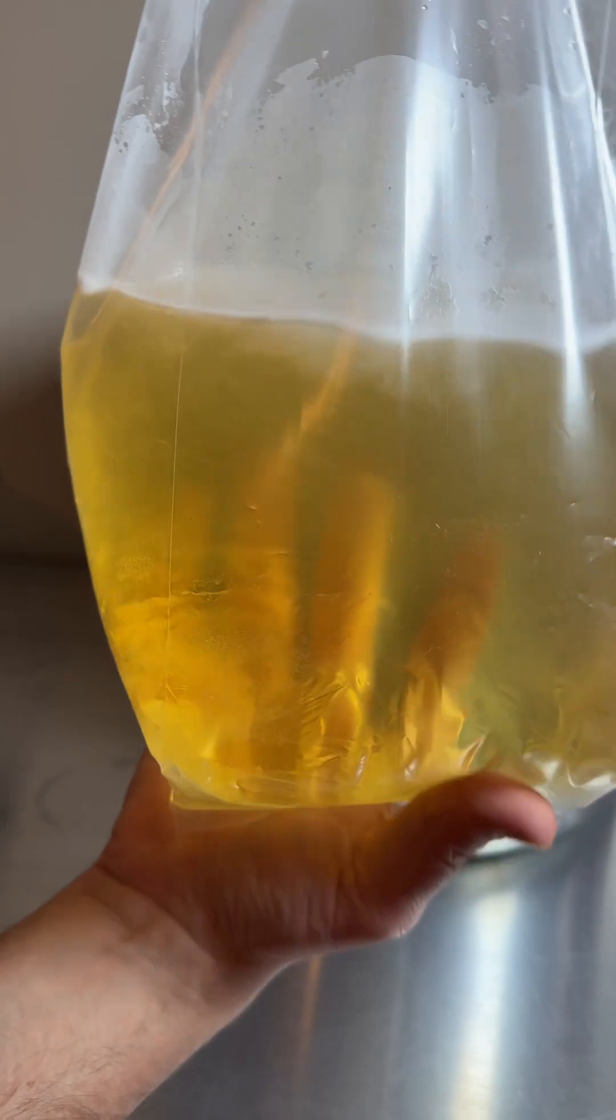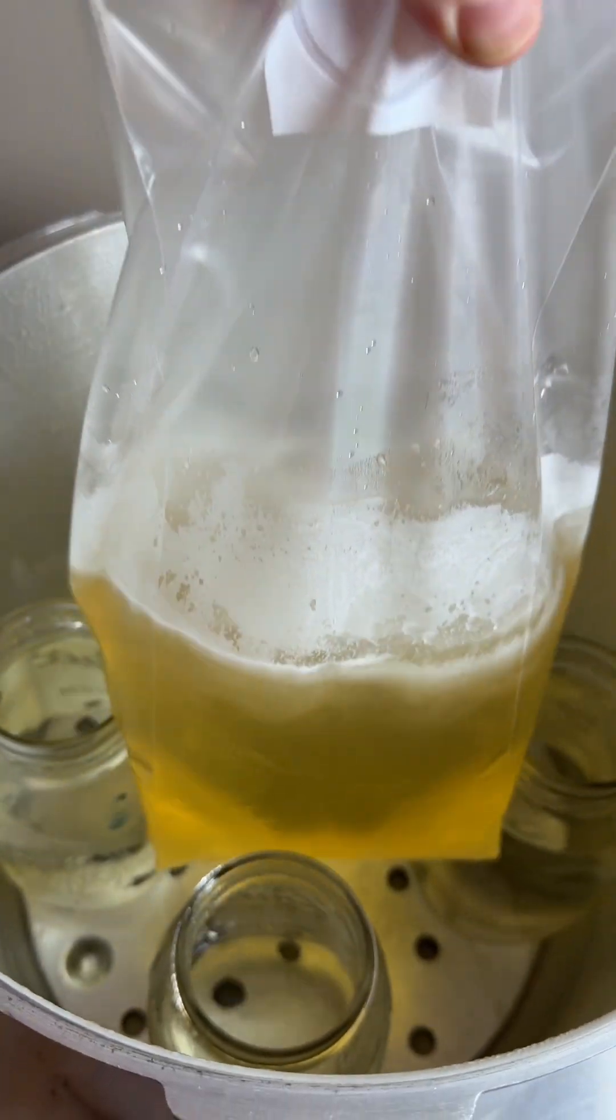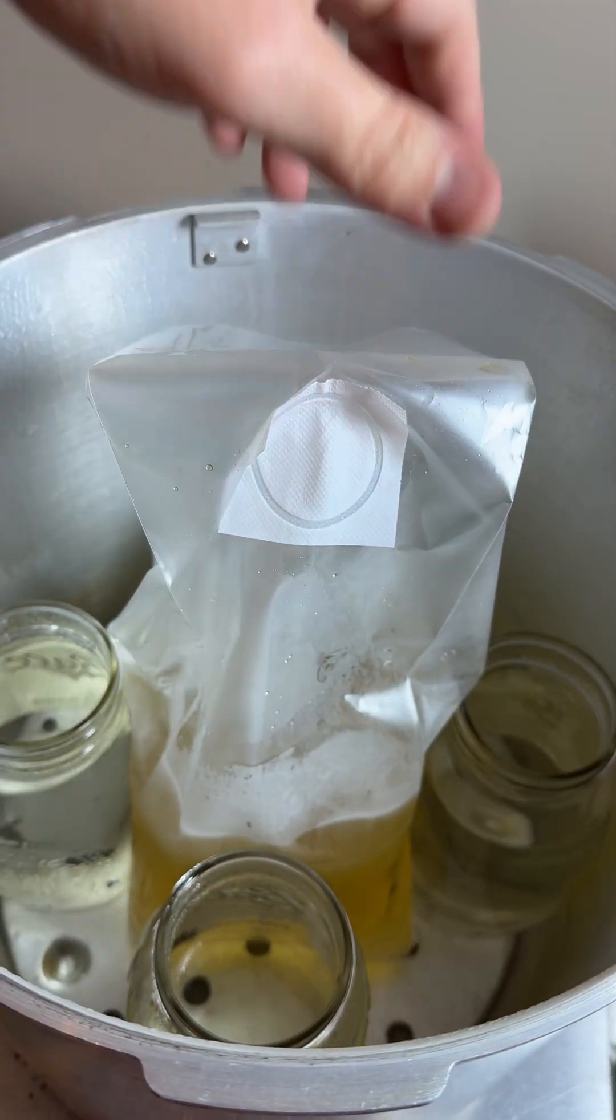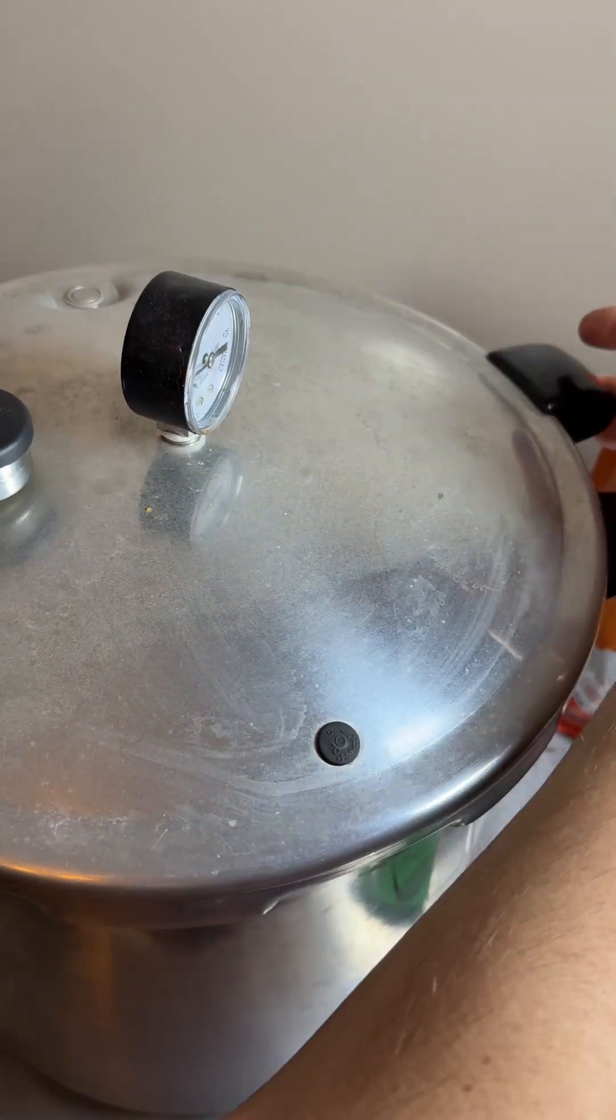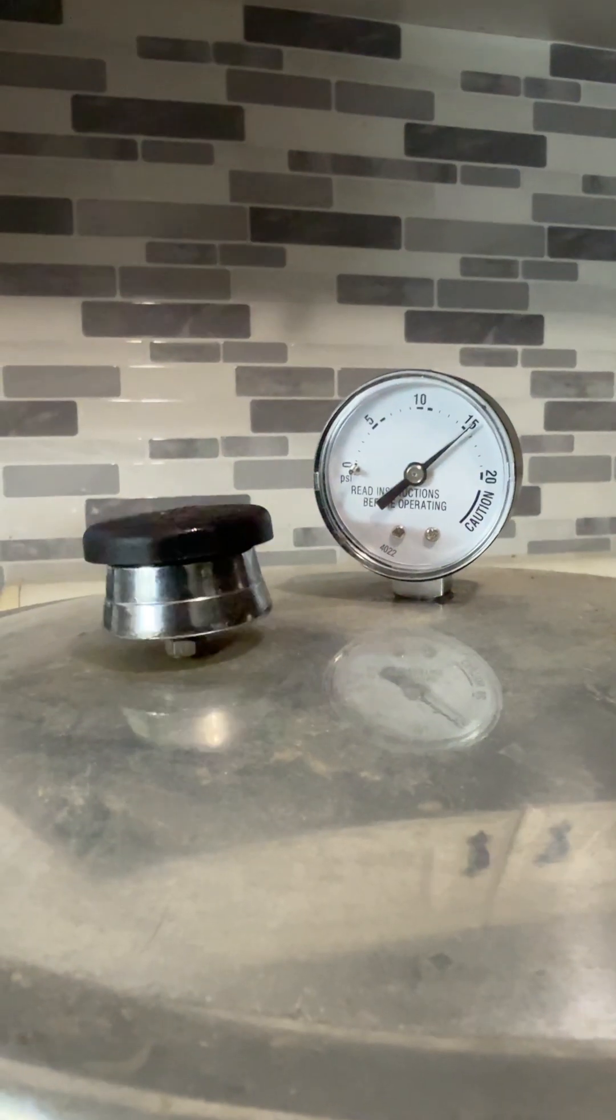Next, after the powders are dissolved in the warm water, I put the bag inside of a pressure cooker with 4 jars of water on every side to keep it supported, and then some clips on the fold of the bag to keep it shut.